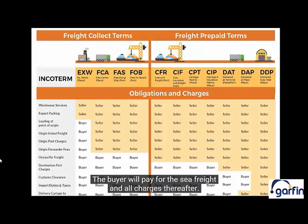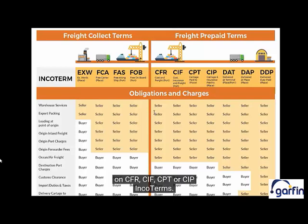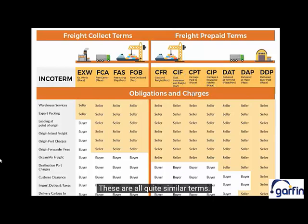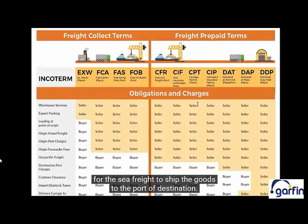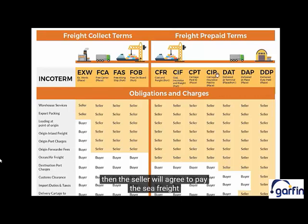The buyer will pay for the sea freight and all charges thereafter. If the seller agrees to pay for the sea freight, then they can choose to sell the goods on CFR, CIF, CPT, or CIP Incoterms. These are all quite similar terms. CFR and CPT are very similar, where the seller will agree to pay for the sea freight to ship the goods to the port of destination. If they agree to sell on CIF or CIP terms, then the seller will also pay the marine insurance cost to ship the goods to the port of destination.